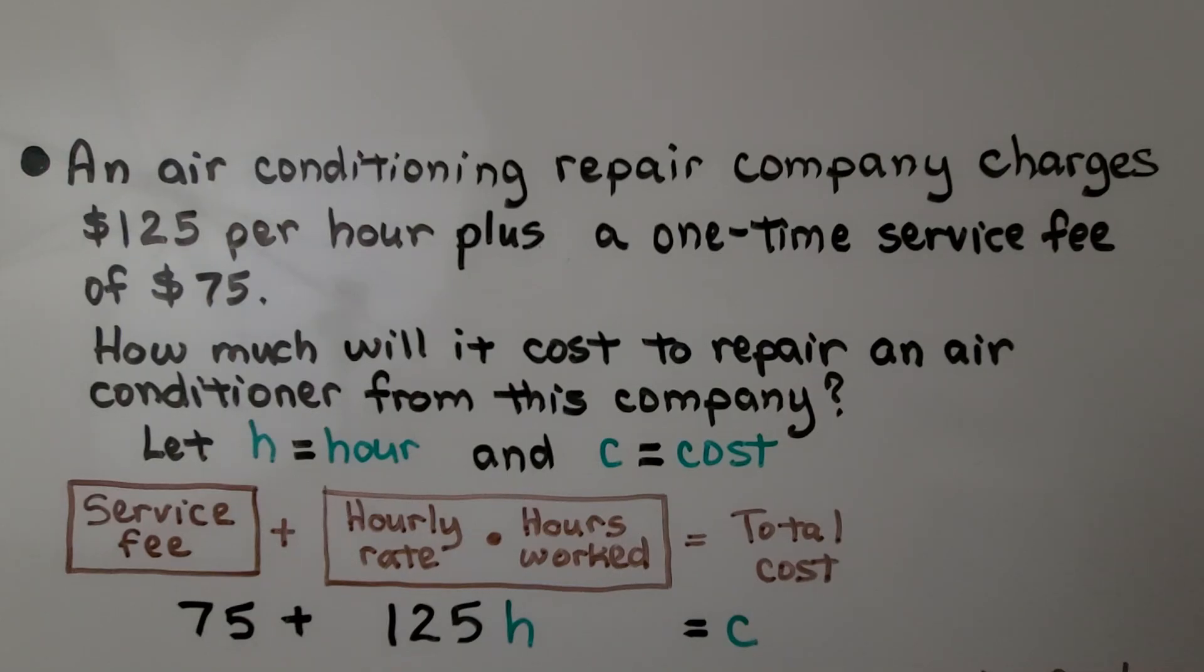An air conditioning repair company charges $125 per hour plus a one-time service fee of $75. How much will it cost to repair an air conditioner from this company? So we're going to let H equal the hours and C equal the cost. We have the service fee, that's a one-time service fee, plus the hourly rate that he charges, $125, times the number of hours worked. We don't know how many hours they're going to take to repair the air conditioner, so we just put an H. And that's going to equal C, the cost.